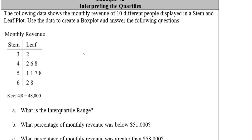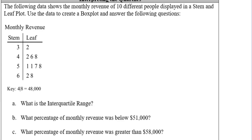For the next example, we have a stem and leaf plot. Remember to always look at the key: four slash eight equals 48,000, meaning the stem is in the ten-thousands place and the leaf is in the thousands. So three and two would be 32,000. Go ahead and enter all of that data into your calculator, get your five number summary, pause the video, draw your box plot, and then come back.